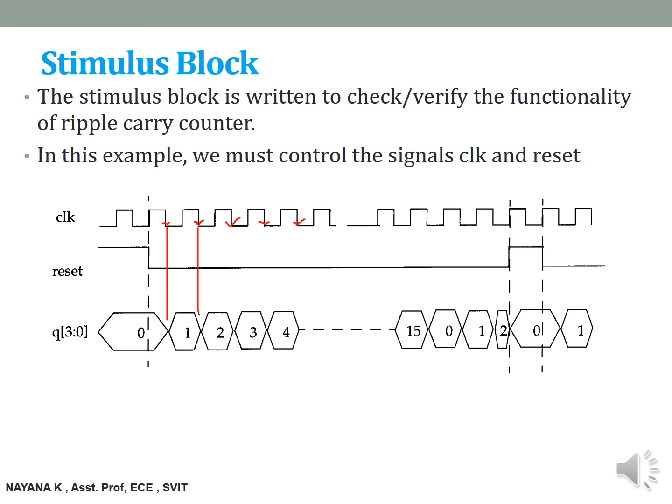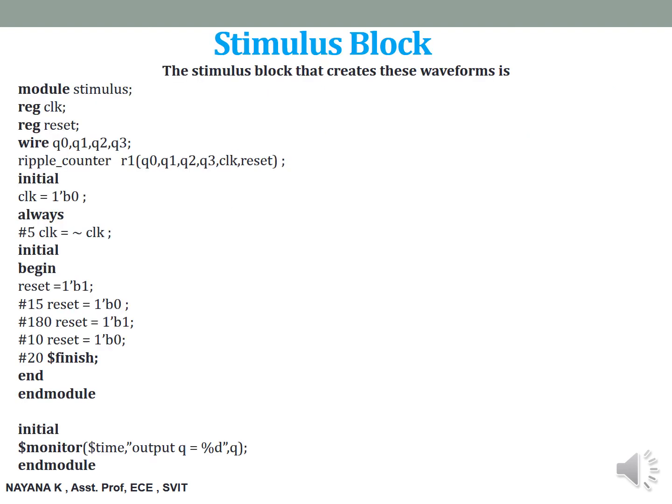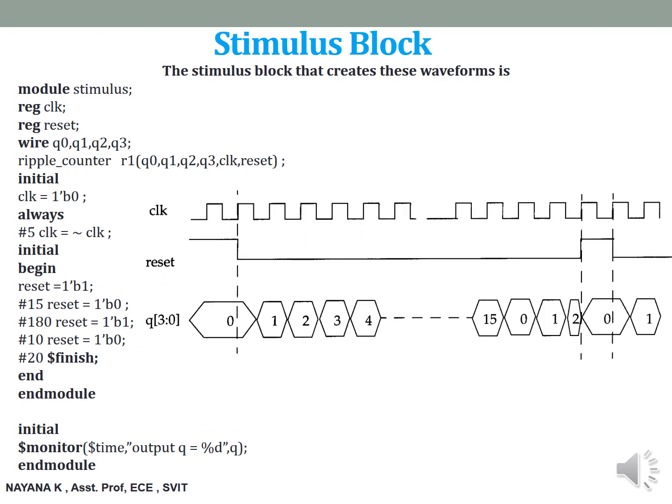The reset is made zero to observe the counting sequence. We can observe that when the reset signal is zero, the counter counts in a normal sequence from 0, 1, 2, 3, and so on up to 15, and then resets back to zero and starts counting again. Again, at a point when the reset signal is made high, we can observe that at the negative edge the counter automatically resets back to zero and starts counting. This is an idea of the expected waveforms, and this can be written in the form of code using the stimulus block. This represents the stimulus block or the stimulus program which creates the waveform we just discussed.